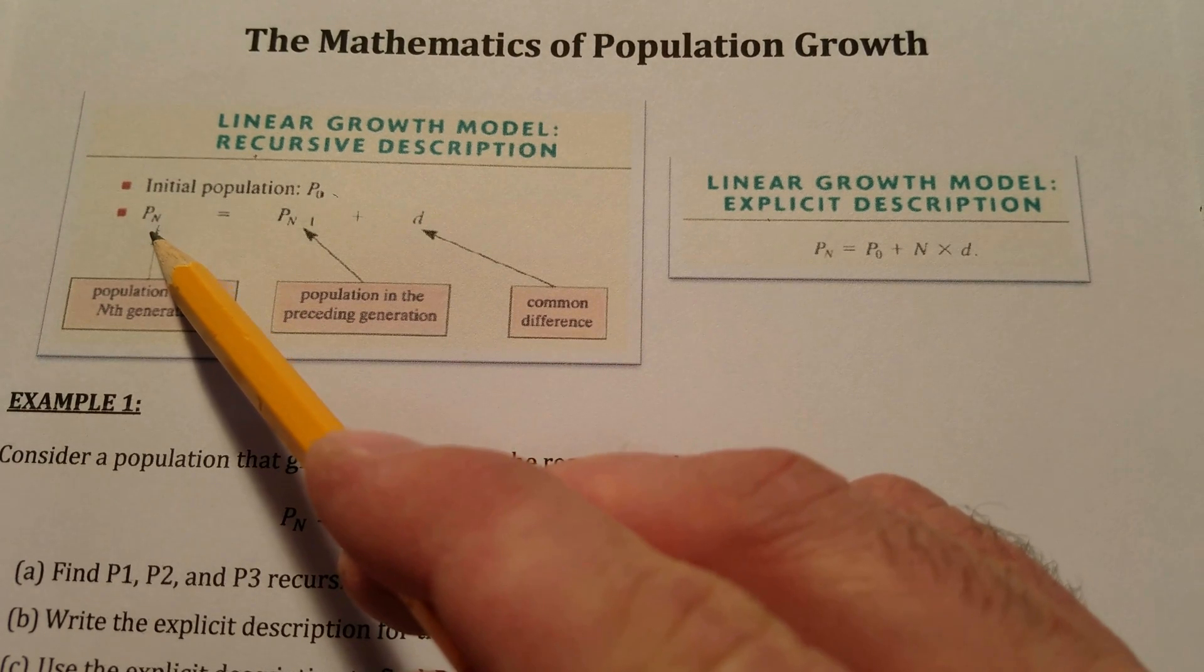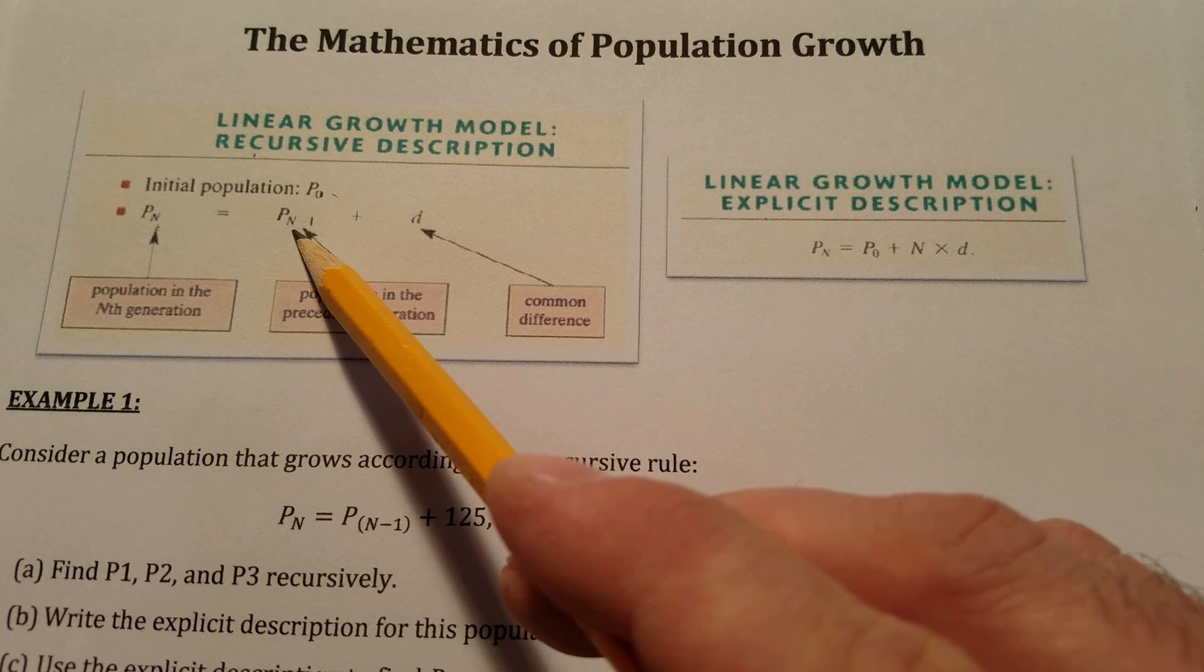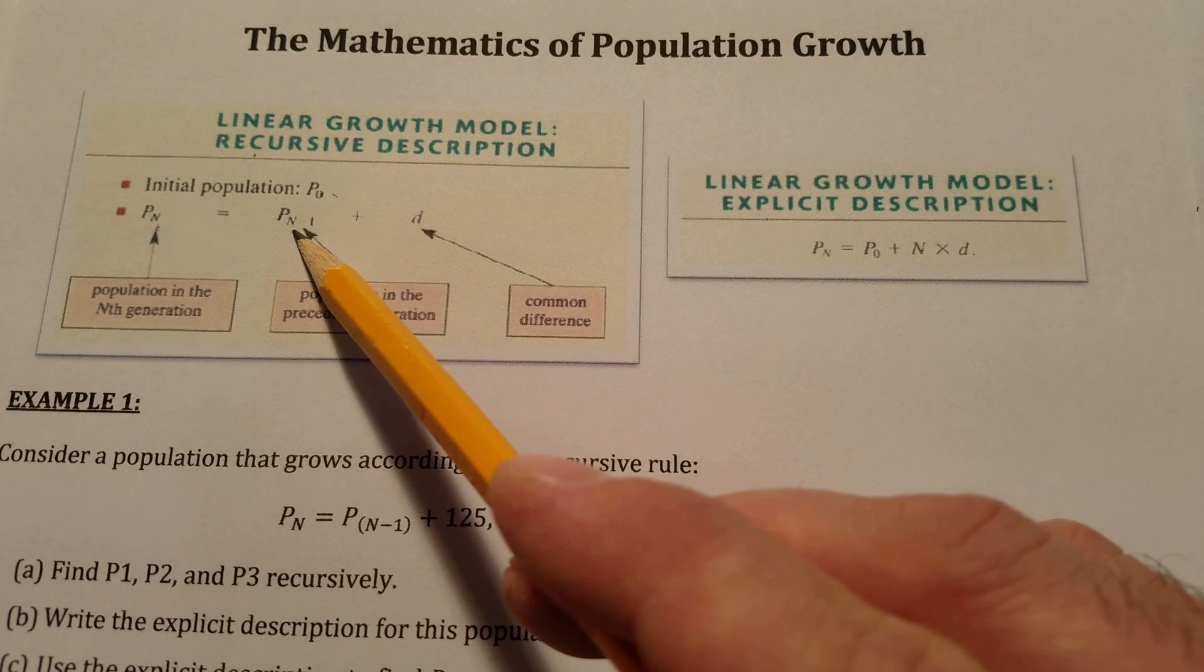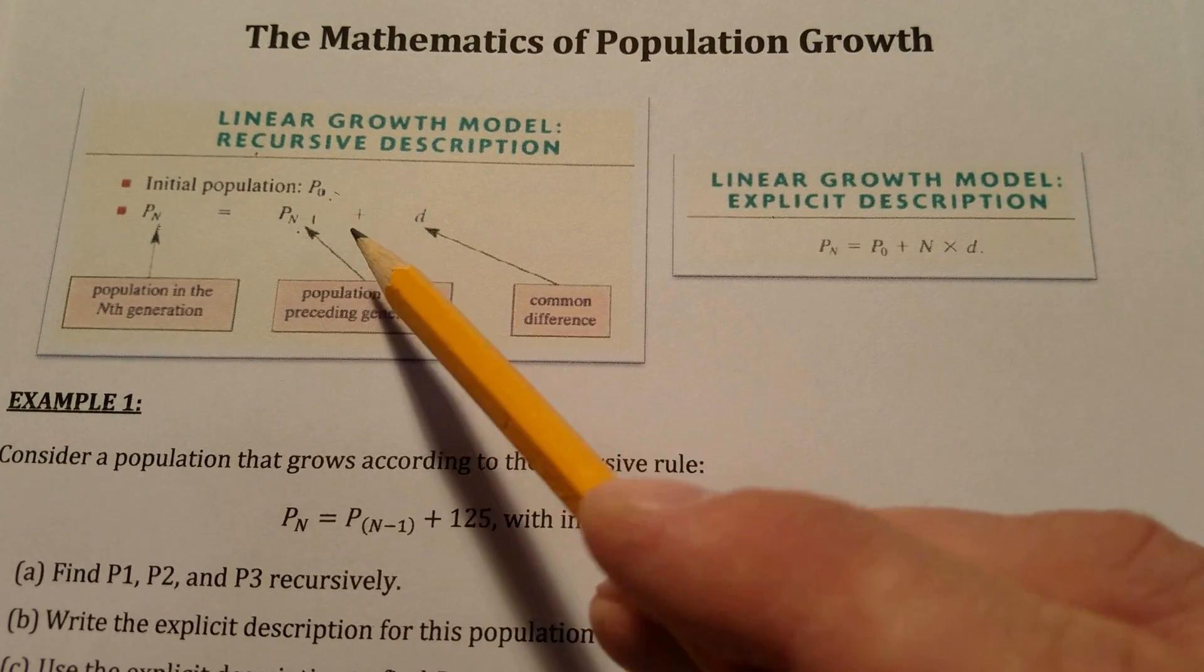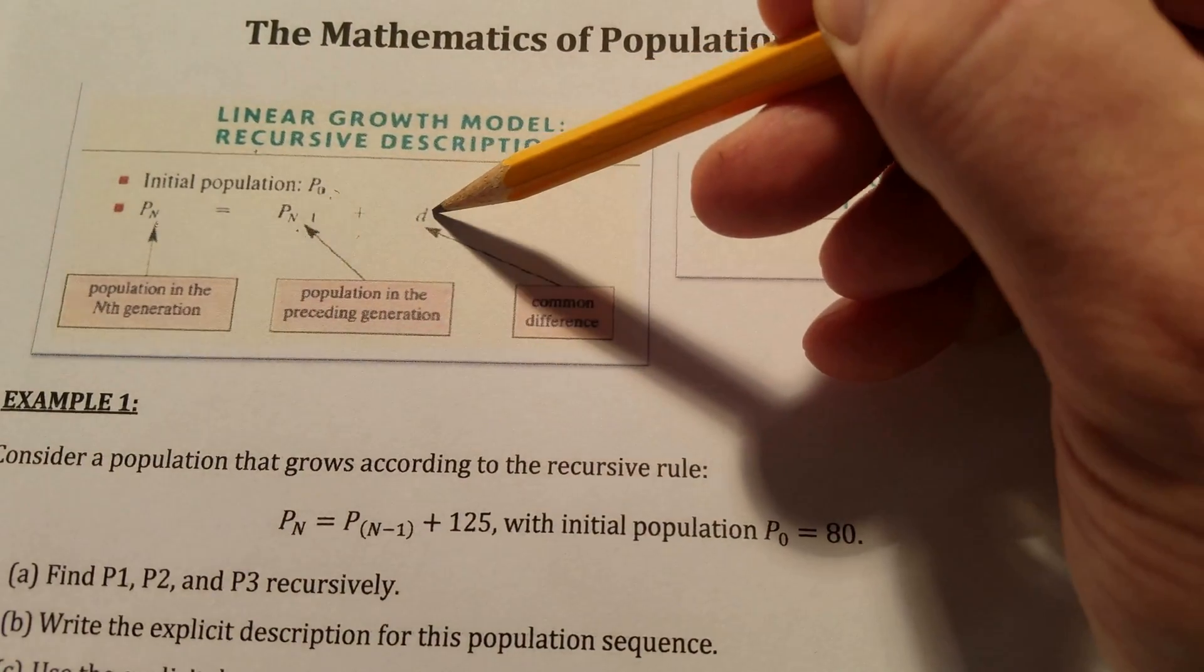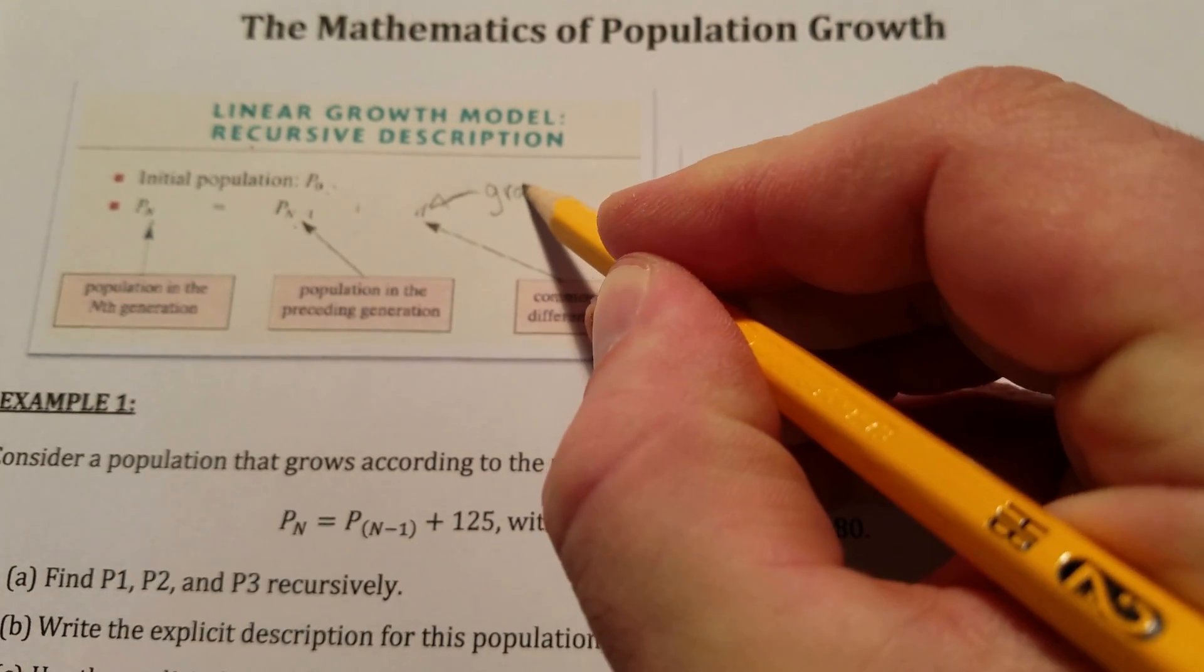we can replace n with one, which would mean that population of generation one would be equal to population of one minus one, which is generation zero. We would reference it from the previous line and add to that the common difference, which is often called the growth rate of the population.